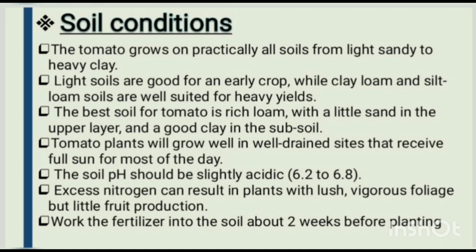Soil conditions: the tomato grows on practically all soils, from light sandy to heavy clay. Light soils are good for an early crop, while clay loam and silt loam soils are well suited for heavy yields. The best soil for tomato is rich loam with a little sand in the upper layer and good clay in the subsoil. Tomato plants grow well in well-drained sites that receive full sun for most of the day. The soil pH should be slightly acidic — 6.2 to 6.8. Excess nitrogen can result in plants with lush vigorous foliage but little fruit production.